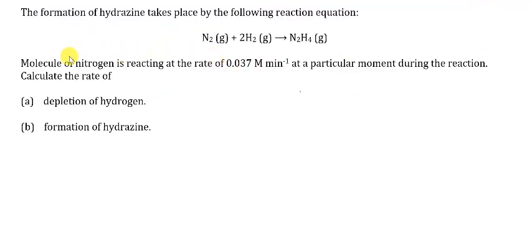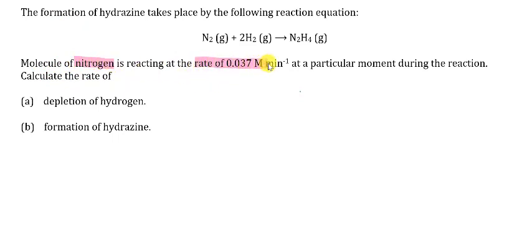For the second example, we have the formation of hydrazine from nitrogen and hydrogen — 2 moles of hydrogen. The nitrogen molecules are reacting at the rate of 0.037 molar per minute at a particular moment during the reaction.